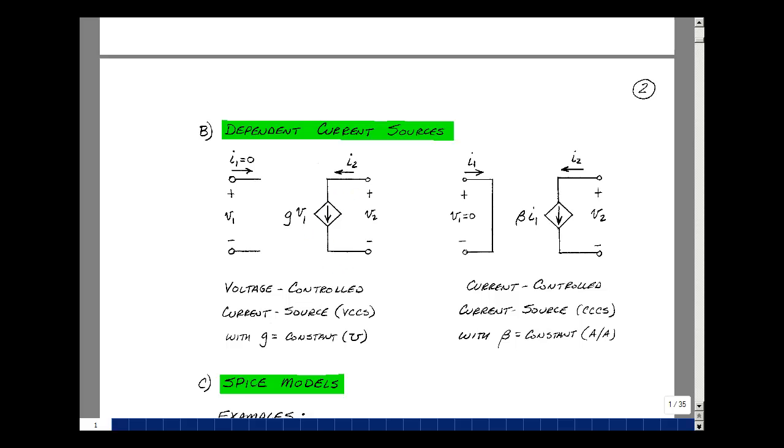Lastly, we could have a current controlled current source. So here my current I2 is equal to beta times I1. I could solve for I2 divided by I1. That would be the value of beta, and that would be dimensionless, or you could say it has units of amps per amp. We're getting a sense current in a short circuit to be our controlling variable.